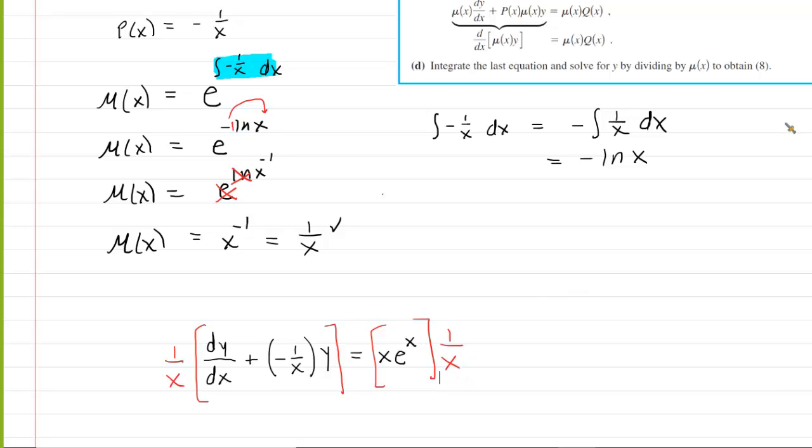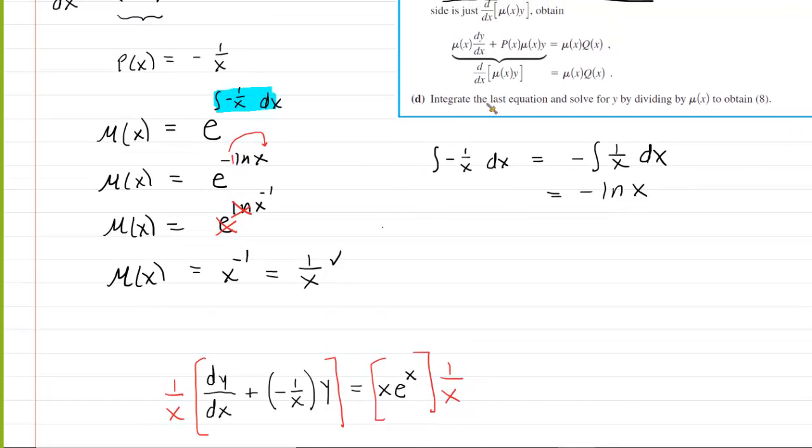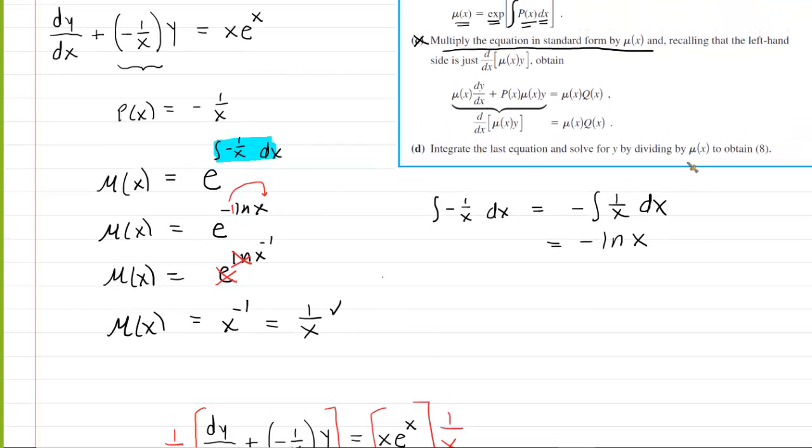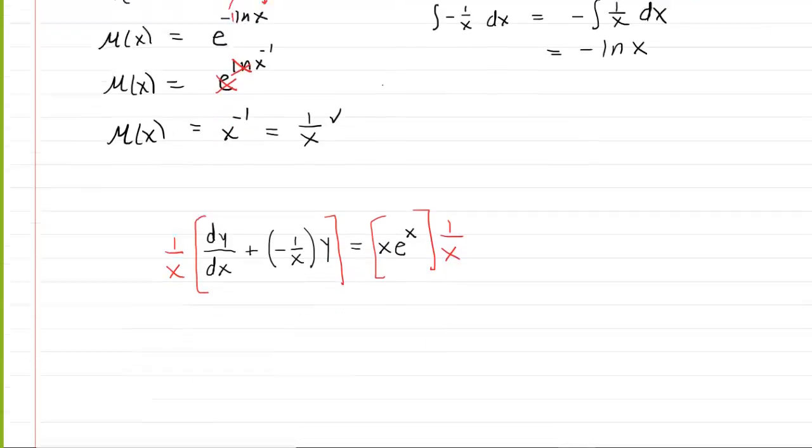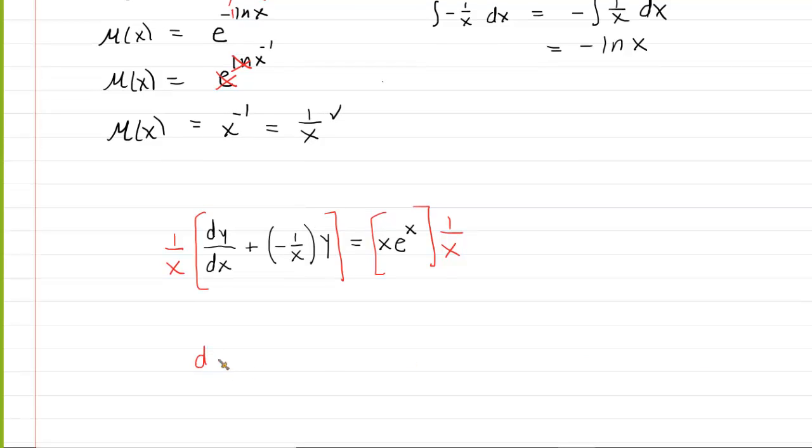Now, the left side gets repackaged. If we go back and look at the steps, it says recall that the left-hand side is just the derivative of the integrating factor times y with respect to x. So the derivative of the integrating factor, which was 1 over x times y, with respect to x.